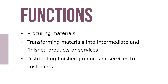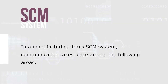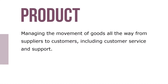Functions include procuring materials, transforming materials into intermediate and finished products or services, and distributing finished products or services to customers. In a manufacturing firm's SCM system, communication takes place among the following areas: managing the movement of goods all the way from suppliers to customers, including customer service and support.